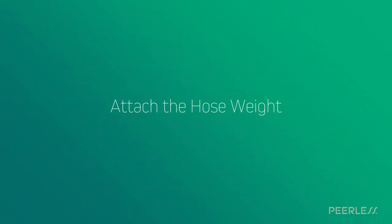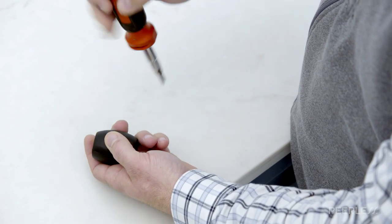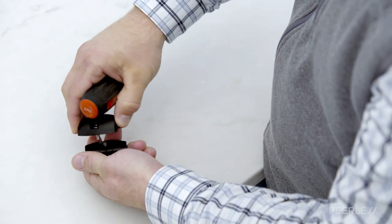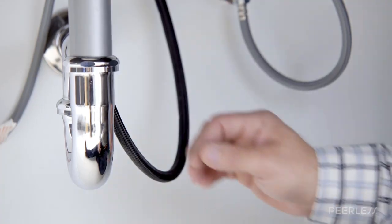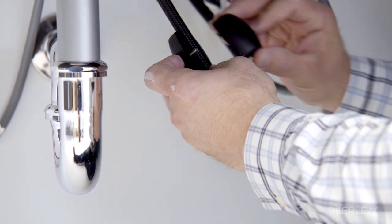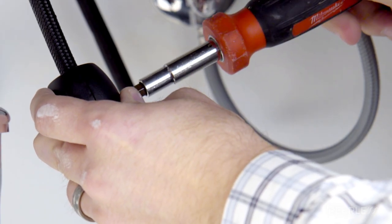Attach the hose weight. Disassemble the hose weight by loosening the two screws. Press the hose weight to the hose assembly at least 14 inches from the hose fitting and re-tighten the screws.